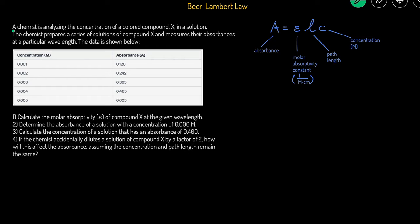Here's another common problem type. A chemist is analyzing the concentration of compound X in a solution. The chemist prepares a series of solutions and measures their absorbance at a particular wavelength. The data is shown in a table of concentration versus absorbance. As concentration increases, absorbance increases as well — which is what we expect since absorbance and concentration are directly proportional.